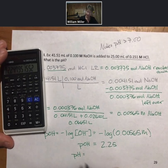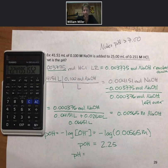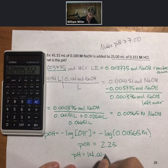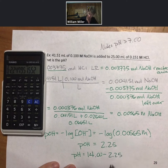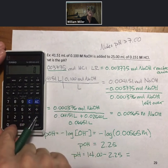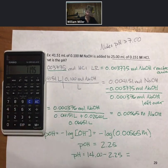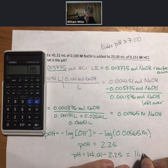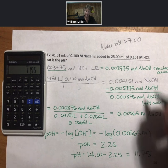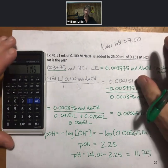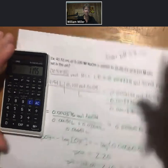And pH plus pOH equals 14. Solving for the pH, take 14 minus the pOH, it's already negative but I will redo it, minus 2.25, I get 11.75 as my pH. And it is greater than seven and we are not surprised by that. In fact we're quite happy about it.